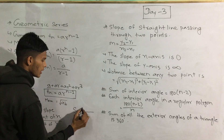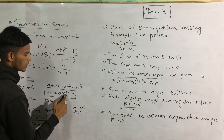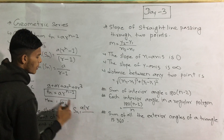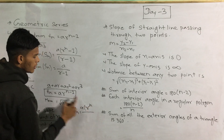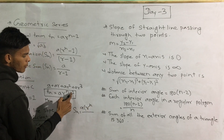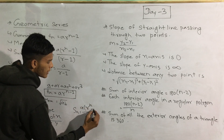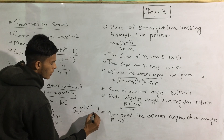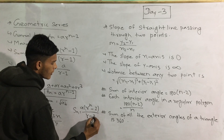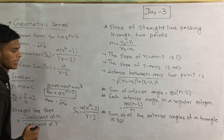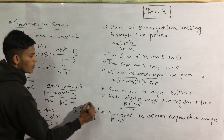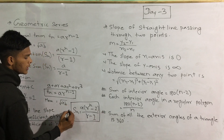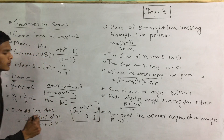The sum is: A, times R to the power n, minus 1, divided by R minus 1. This is the sum of a geometrical series: S = A(R^n - 1) / (R - 1).